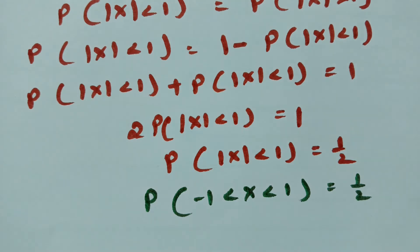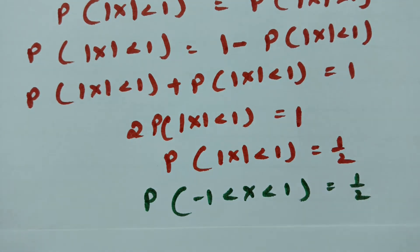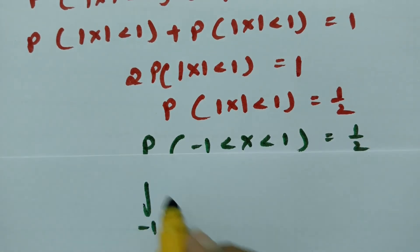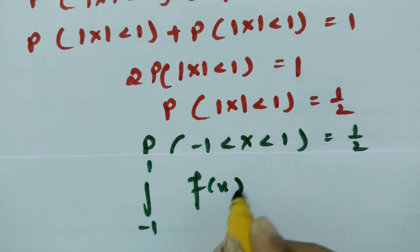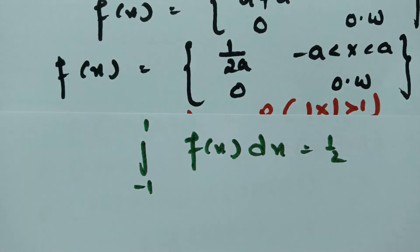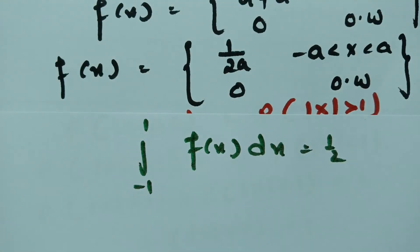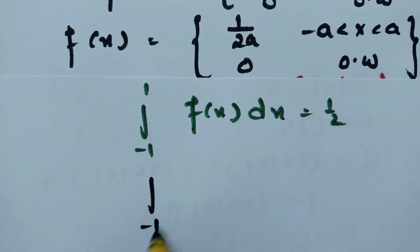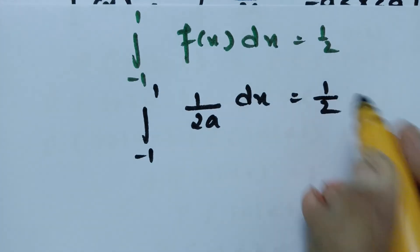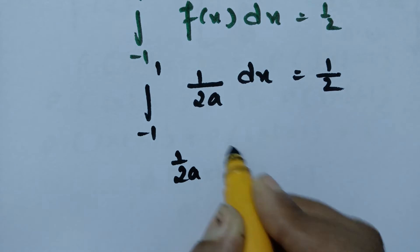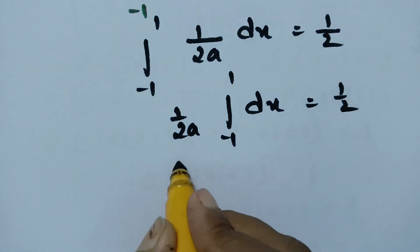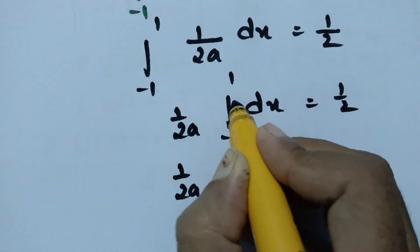Therefore, P(-1 < x < +1) = 1/2. This means the integral from -1 to 1 of f(x) dx = 1/2. Substituting f(x) = 1/(2a), we get the integral from -1 to 1 of (1/2a) dx = 1/2.